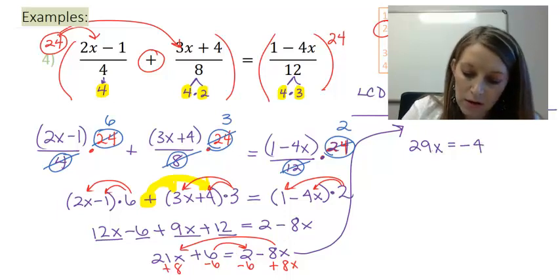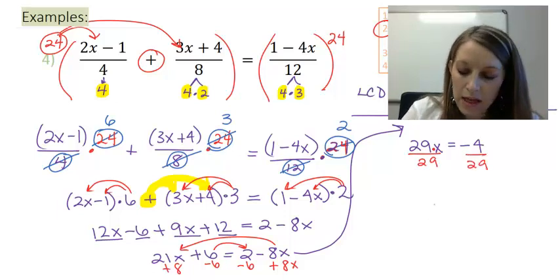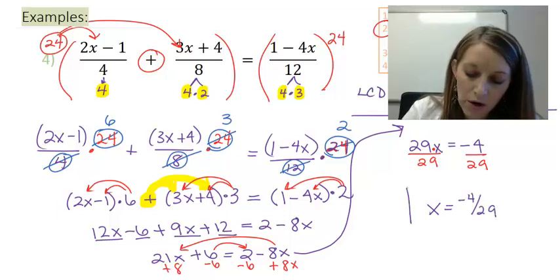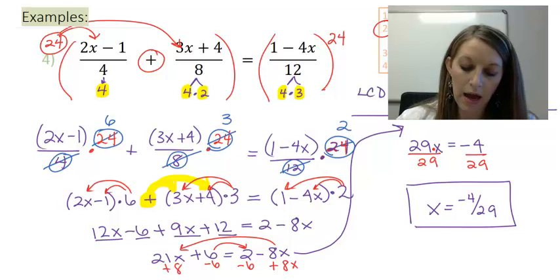My final thing to isolate my x variable is to divide by 29. And that leaves me with the answer that I knew I was looking for, negative 4 over 29.